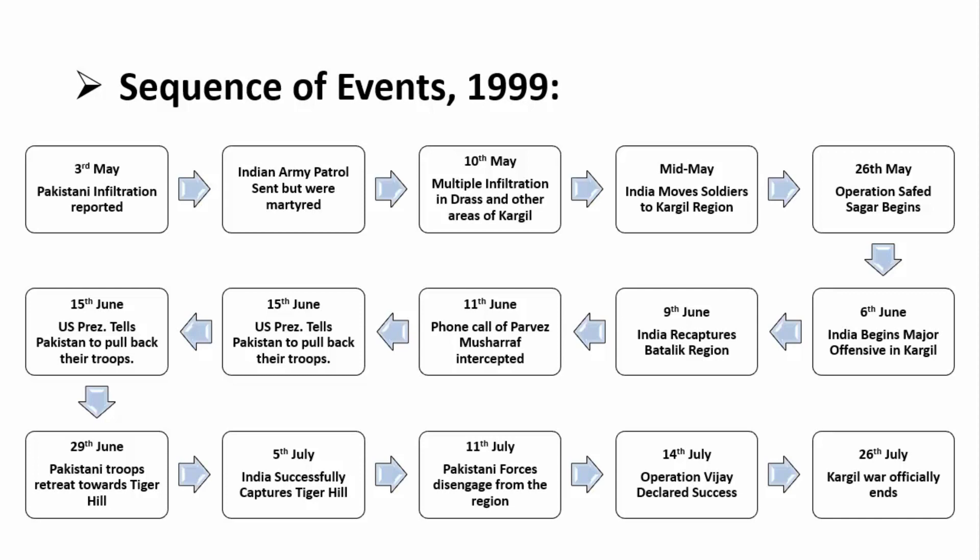Now I will tell you the sequence of events. In February and March 1999, the infiltration started in the Kargil region. Initially, on 3rd May, one of Pakistan's infiltrations was reported by a Kashmiri shepherd. In response, India sent a patrolling team on 5th May, but they sacrificed their lives.